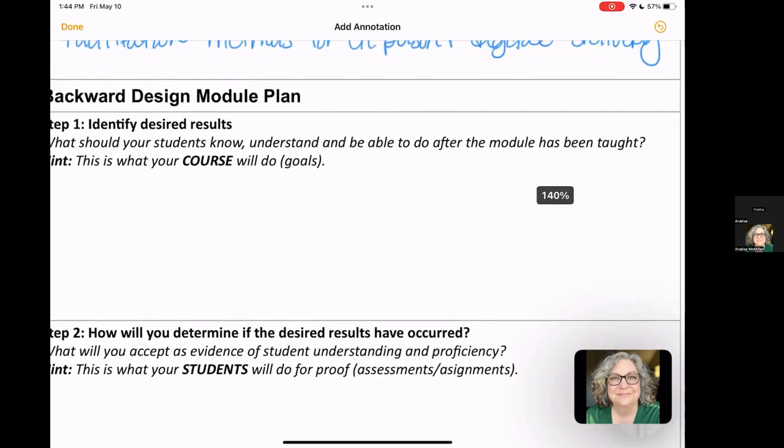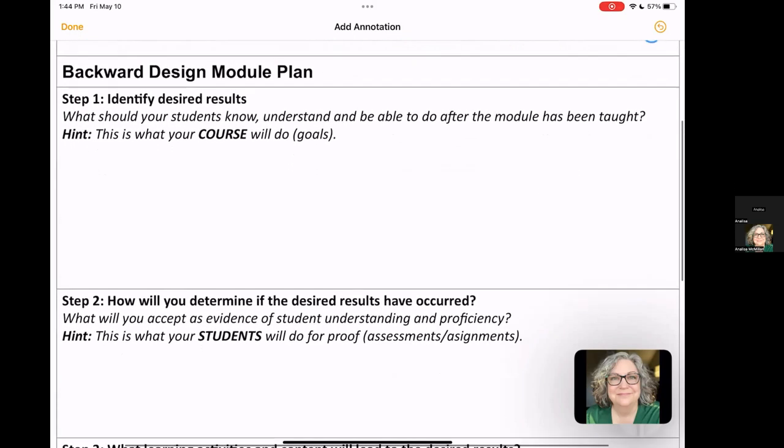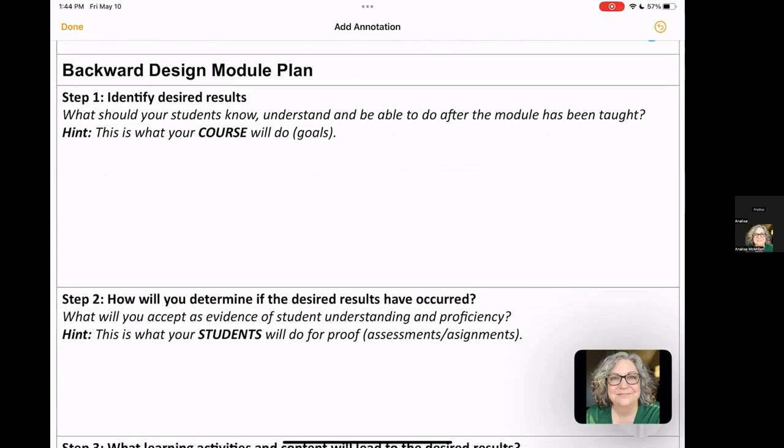Next up, let's talk about this section in our plan where we're going to talk about identifying the desired results, which is step one. The backward design plan has three steps. In step one, we're going to talk about those desired results. This is what our students should know, understand, and be able to do after the module has been taught.